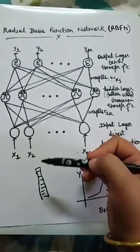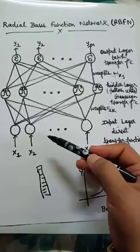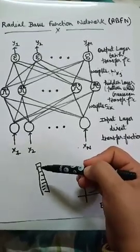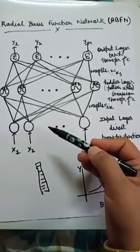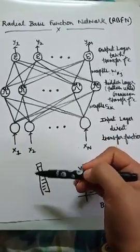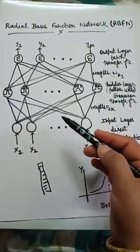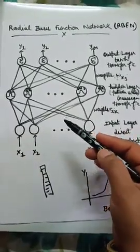That means if the input is equal to the prototype, then the response from the RBF neuron will be one. If the distance between input and prototype grows, the response falls off exponentially towards zero. So the shape of the RBF neuron response is a bell curve.